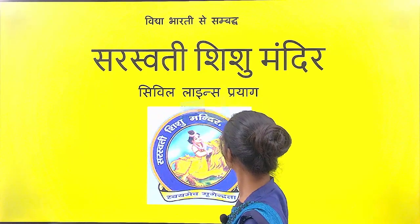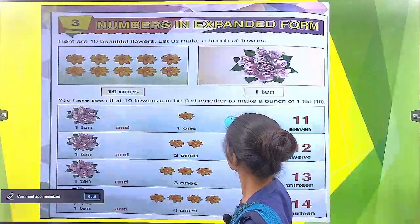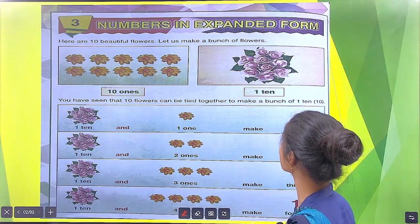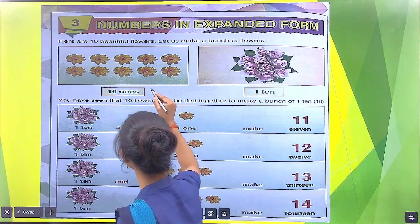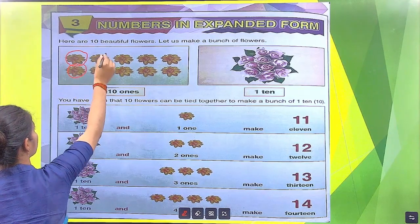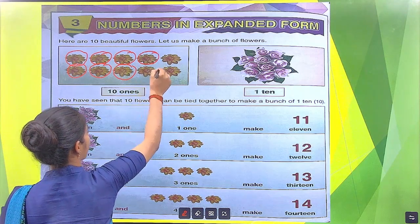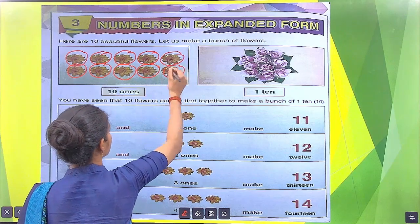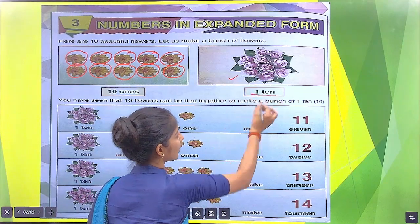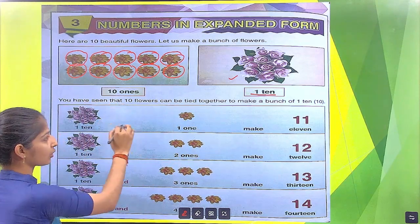Open your book. Here are 10 beautiful flowers. Let us make a bunch of flowers. We will make a group of 10 flowers — 1, 2, 3, 4, 5, 6, 7, 8, 9 and 10. Here are 10 flowers; we will make a group of 1 ten. Here are next 10 flowers, then we will make 2 tens. If we add 10 more, then we will make 3 tens.